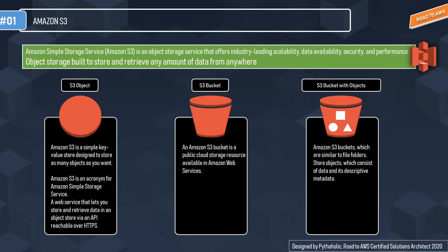Amazon S3 is a web service that lets you store and retrieve data within an object store via an API reachable over HTTPS. Objects on S3 can be image files, simple files, spreadsheets, log files, or video files. Each object on S3 can be up to five terabytes in size. Remember that S3 objects are object-type data like images, audio files, video files, and files in general — not strings like in typical databases.